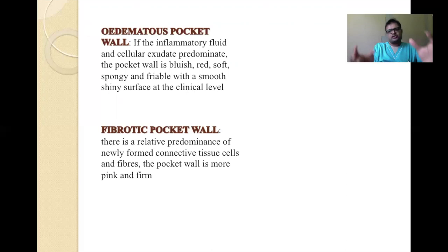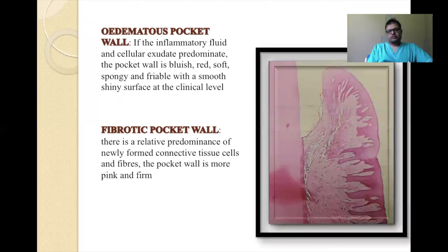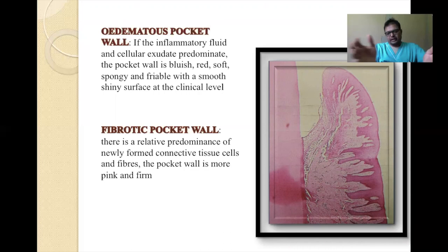In an exacerbative state, the pocket wall is bluish-red, soft, edematous, and bleeds easily. That's why periodontal pockets are sometimes known as healing lesions — they undergo phases of destruction and then healing. However, the rate of healing is always less than the rate of destruction. Once someone has a pocket and bone loss without clinical intervention, they will eventually lose that tooth over time due to the continual degenerative bone loss process.